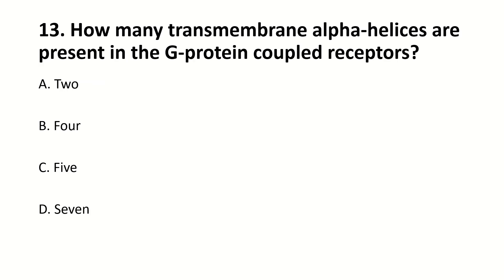How many transmembrane alpha helices are present in G protein coupled receptors? Right answer is D — seven.